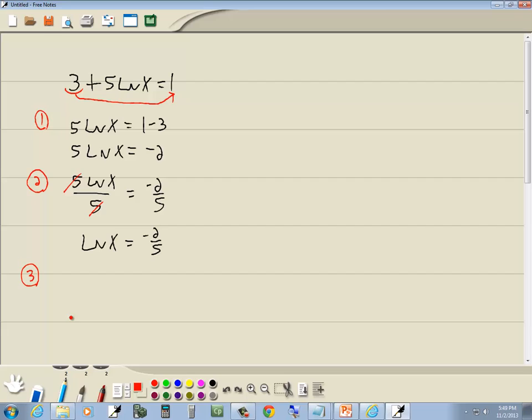Step 3, use definition log to rewrite in exponent form. Now, whatever number normally follows this is our base, but there isn't any number there. But it's ln. Whenever you have natural log, that's always your base is equal to e. Then what follows that is going to be our q, and then the other side is going to be our p.